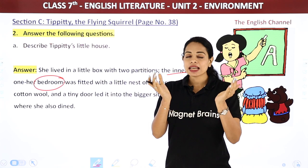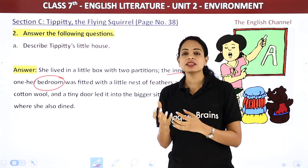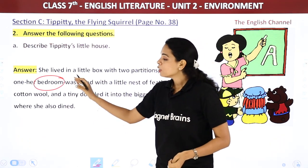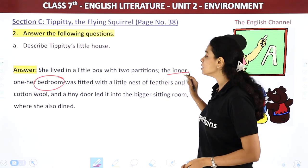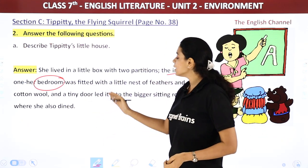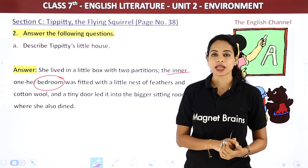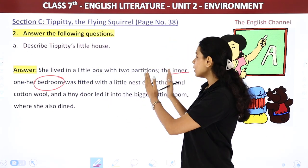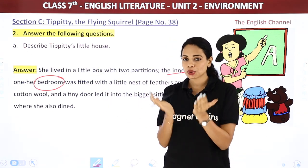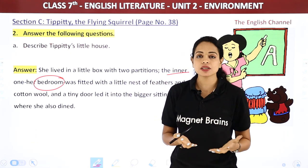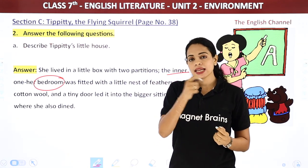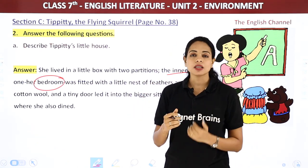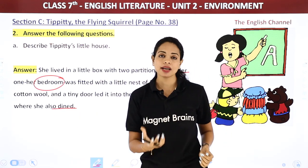Regarding Tippity's box: there was a little box with two partitions. The inner section was her bedroom, which had a small nest made of feathers and cotton wool, and a tiny door led into the bigger sitting room where she also dined. So the box had two partitions — the inner bedroom with a nest of feathers and cotton wool, and the outer sitting-cum-dining room.